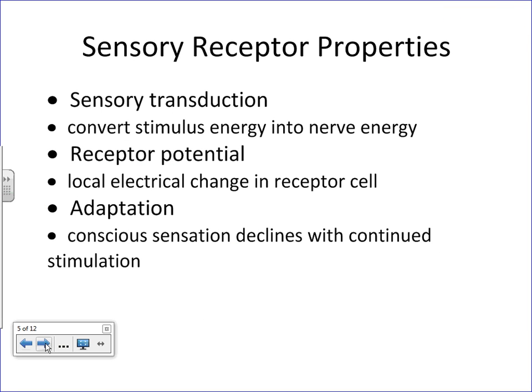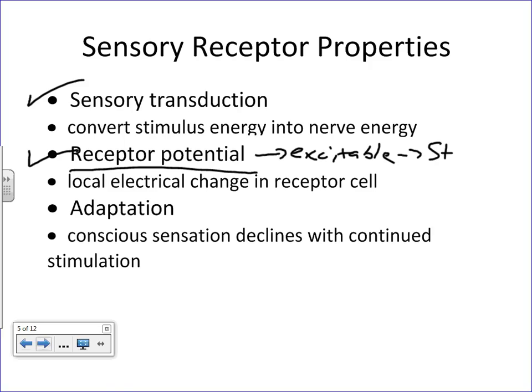Sensory receptors have certain properties. Remember, these are excitable tissues — basically specialized nerve endings associated with axons, just like muscle tissue. One common denominator is receptor potential: receptors have a resting membrane potential just like any other cell, they are excitable tissues, and they are sensitive to various stimuli.